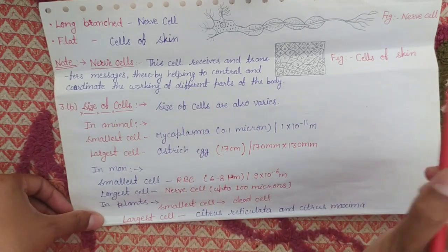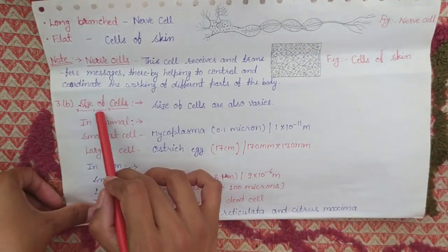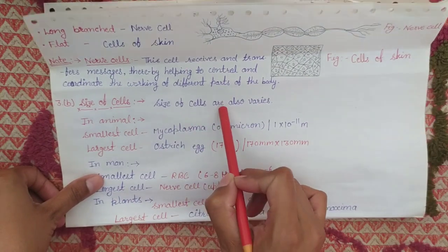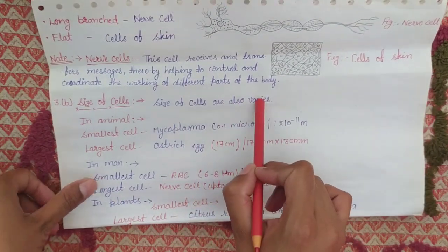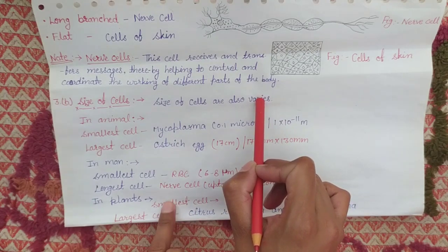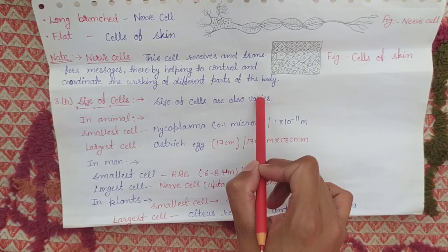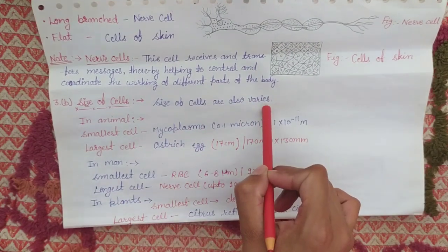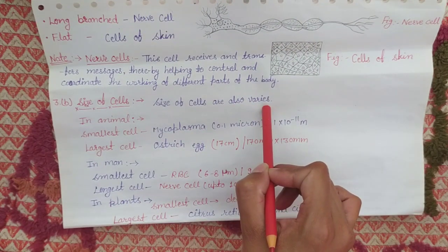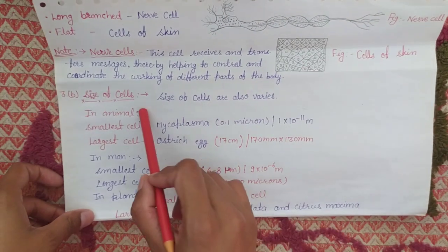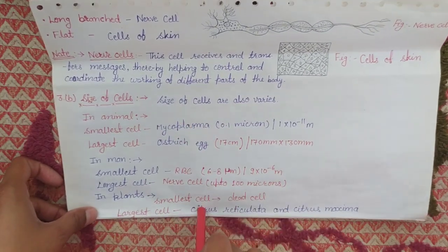Shapes of cells is done. Now we will start the size of cells. The sizes of cells are also varied — some are small, some are large, some are long. So their sizes are different. In animals, in plants, and in human beings there are different cells which are small and long. We will discuss all these things.